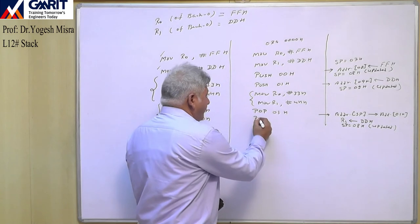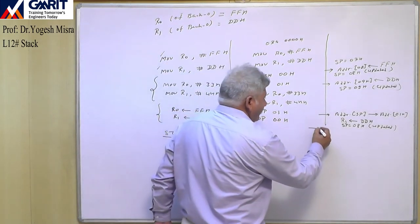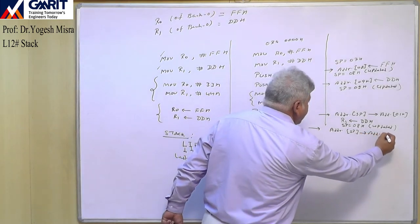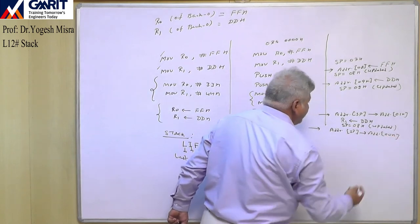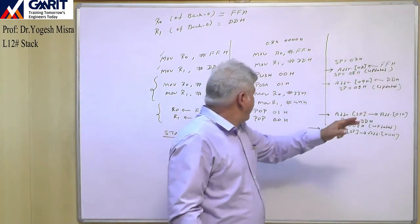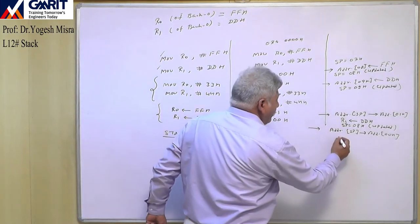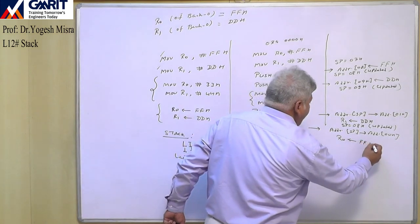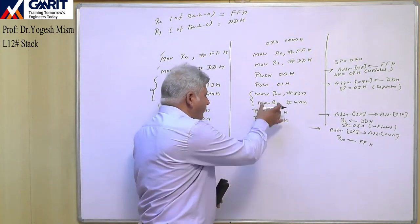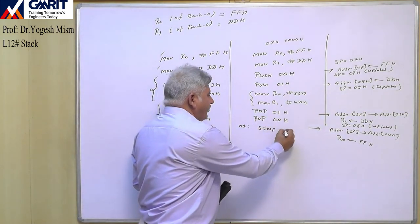Now we use POP 00H. This instruction retrieves the content from the address pointed by SP — which is 08H — and stores it at address 00H. At 08H we have FF, so FF will be moved to address 00H. R0 now has FFH. SP decrements to 07H. We have retrieved the original values and can use R0 and R1 in the remaining part of the program.